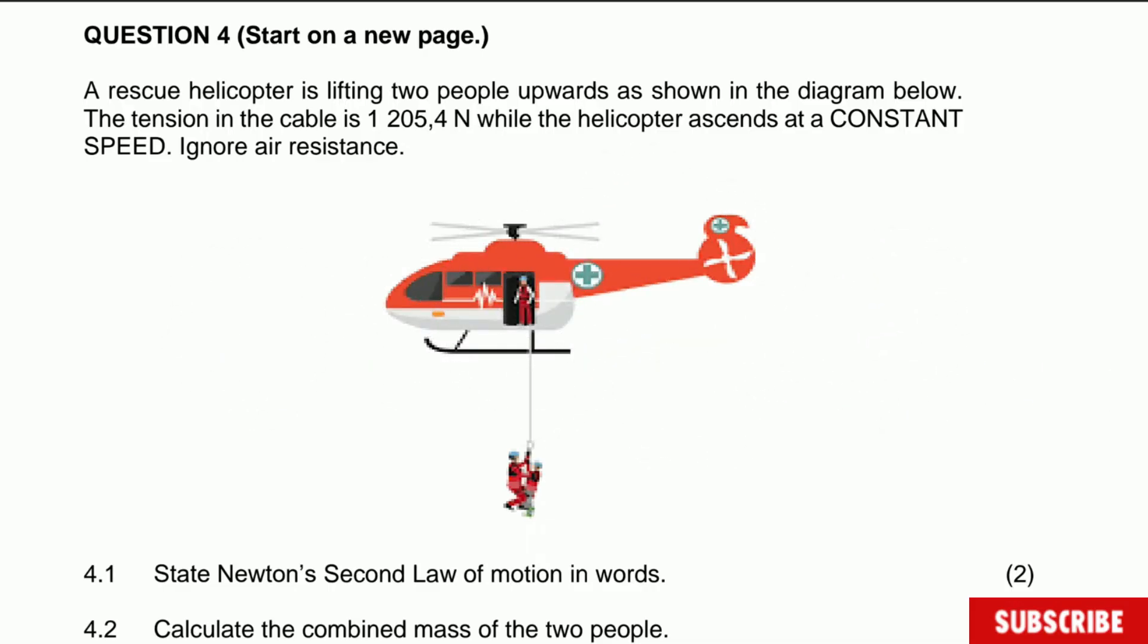Okay, this question says a rescue helicopter is lifting two people upward as shown in the diagram below. The tension in the cable is 1205.4 Newton while the helicopter ascends at constant speed. So the speed of the helicopter moving upward is constant. Ignore air resistance, and that is quite important here.